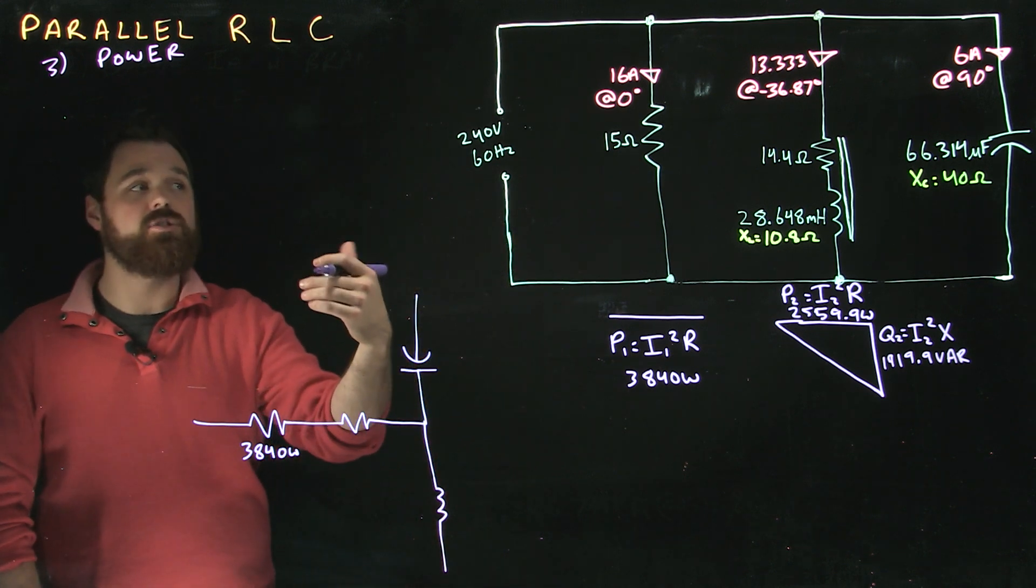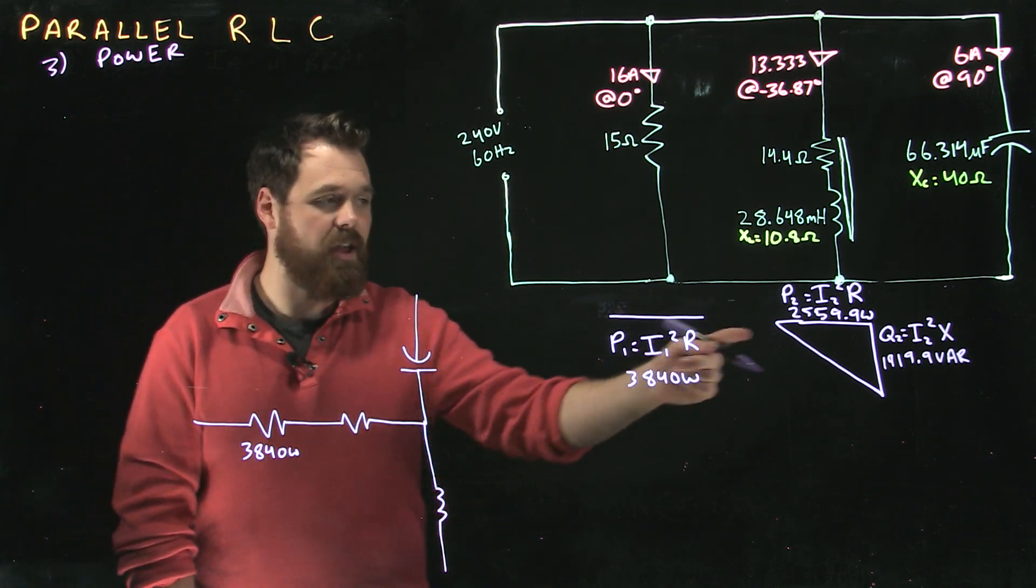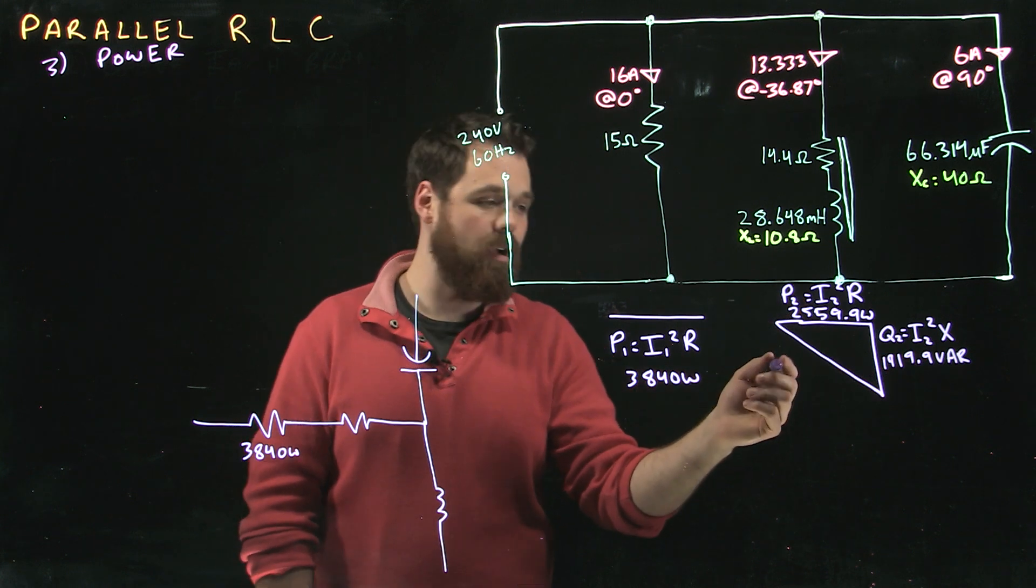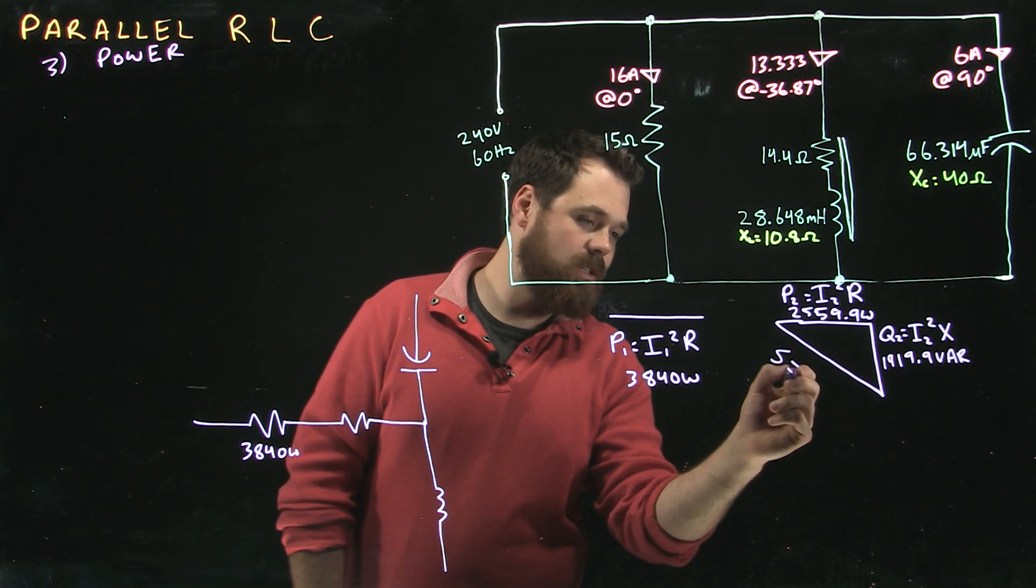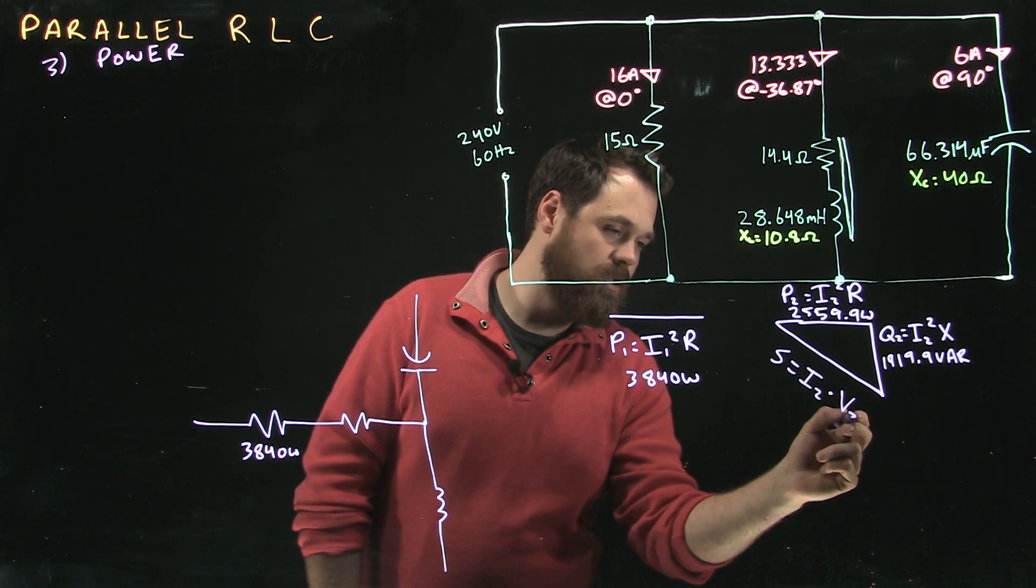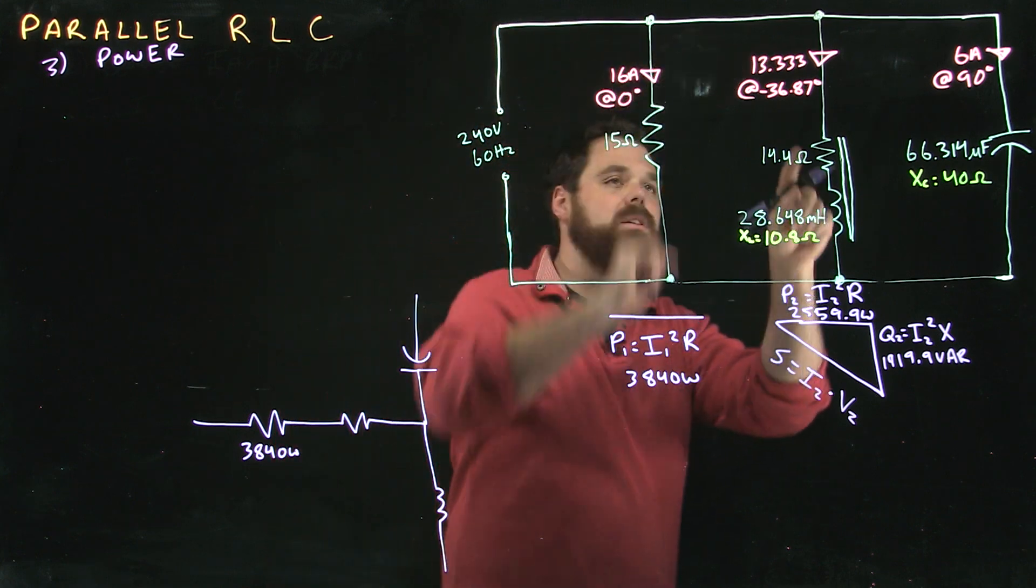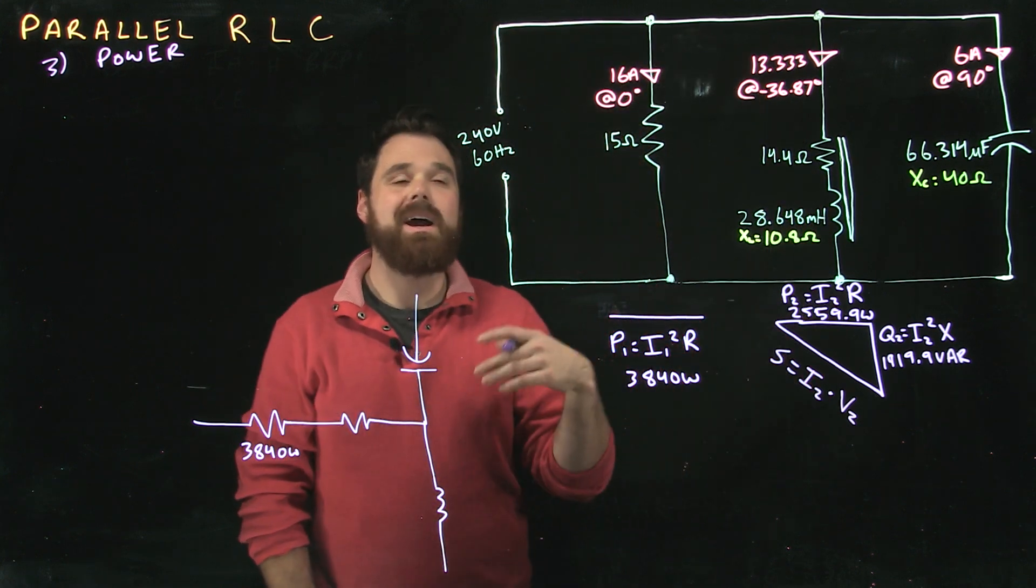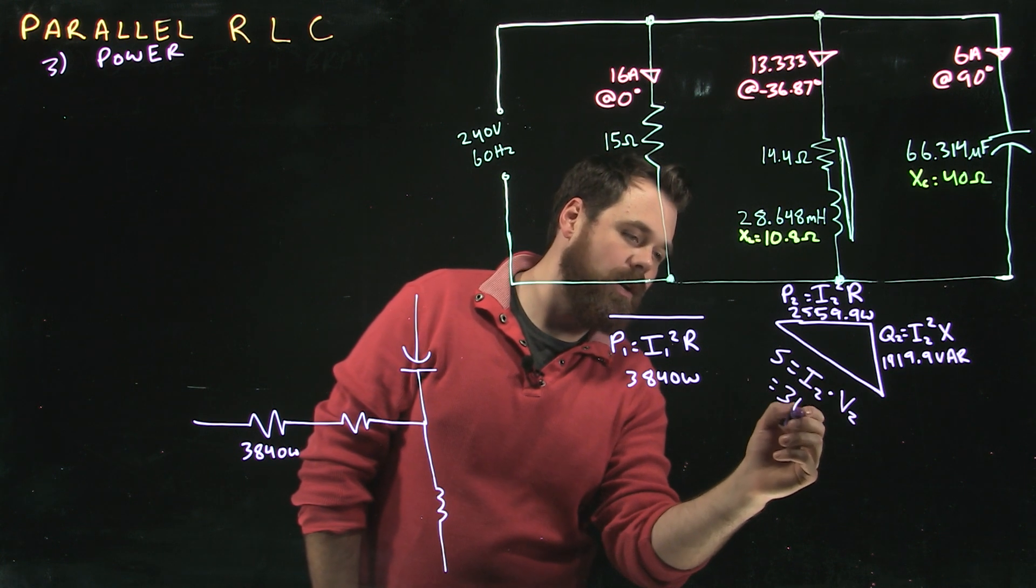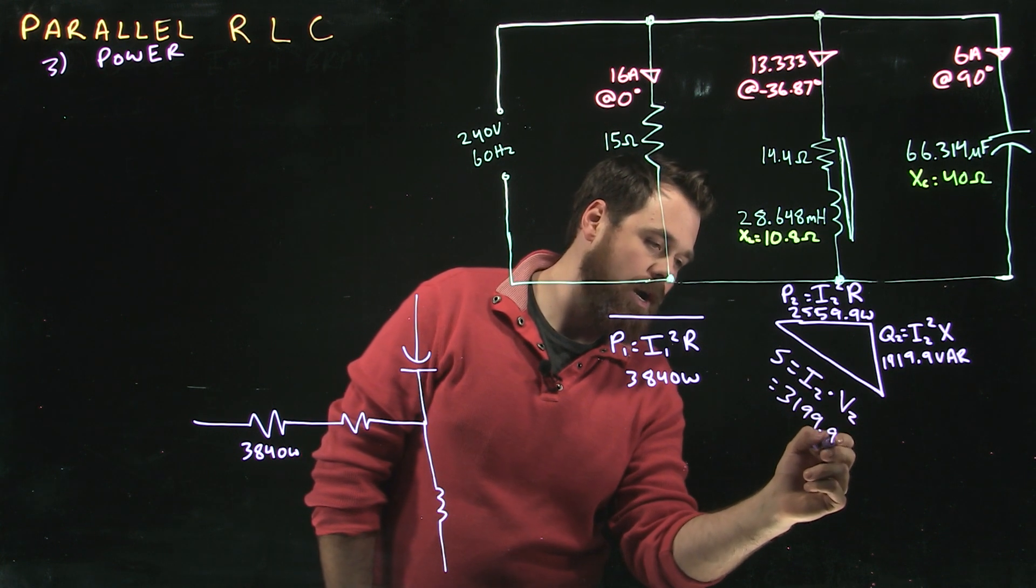Now, two ways from here. I can do some Pythagorean's Theorem. Q squared plus P squared equals S squared. Or I can go S equals I2 times V2. 240 volts times 13.333 amps. Either way, I should come out around 3199.9 VA.